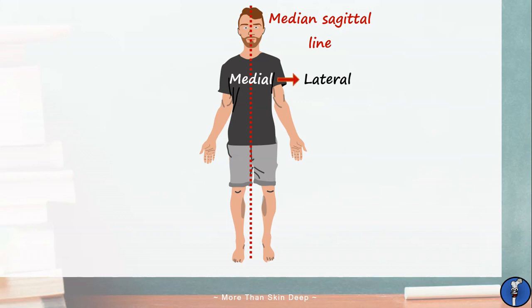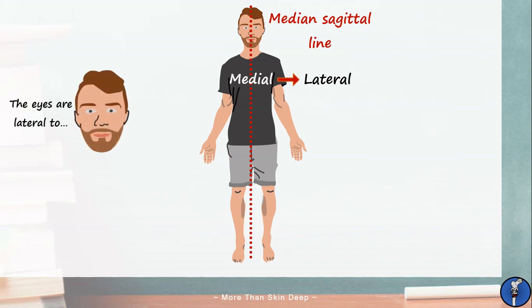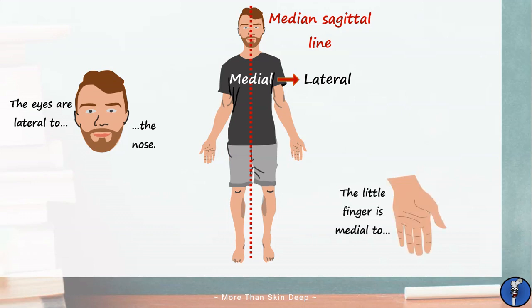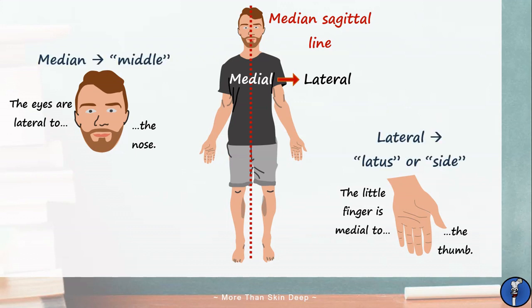For example, the eyes can be described as lateral to the nose, as the nose sits right on the median sagittal line, whereas the eyes sit some distance away from it. Likewise, we can describe the little finger as being medial to the thumb, as it is closer to the median sagittal line. These two words come from median, meaning middle, and latus, meaning side.